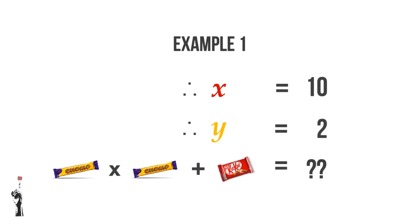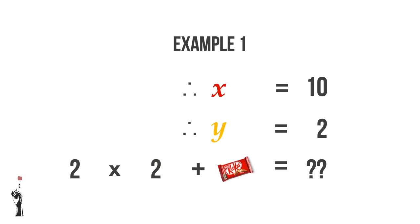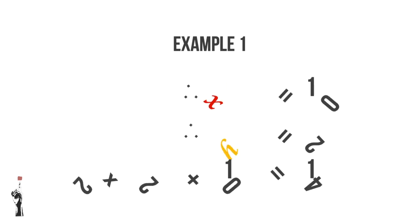We can take both of these values and plug them into the third line. We find that yellow chocolate times yellow chocolate plus red chocolate is equal to some number. We have 2 multiplied by 2 plus 10, which is equal to 14. Let's take a look at another example.